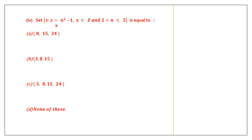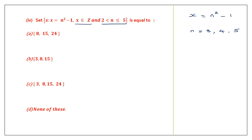Question 4. X is such that X equals n squared minus 1. We are told X belongs to integers, so elements can be positive or negative. We need to find the value of n. Here, n is greater than 2 and n is less than or equal to 5. So n can be 3, 4, and 5. Now we can find the value of X.